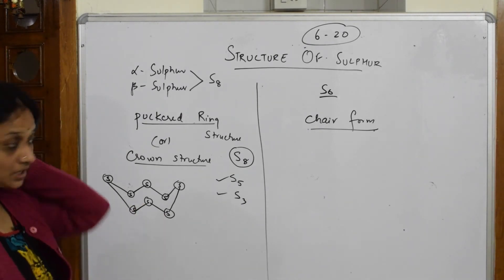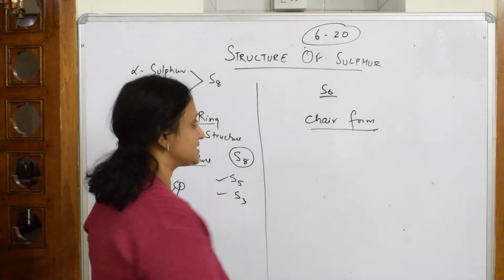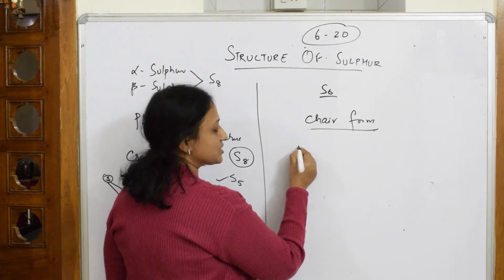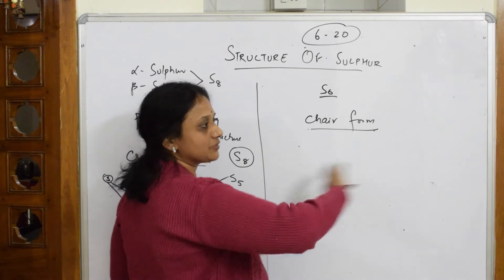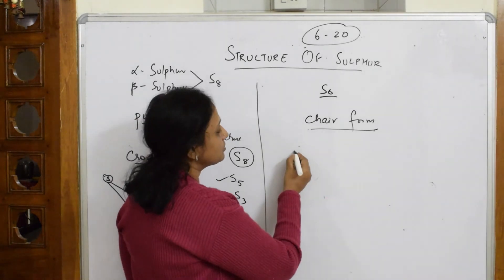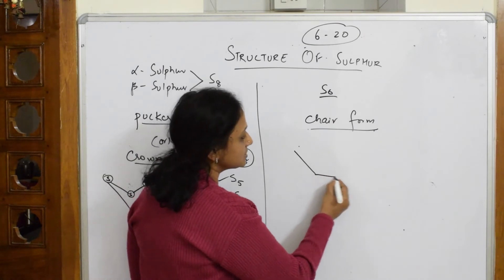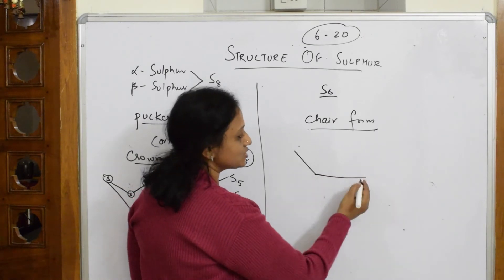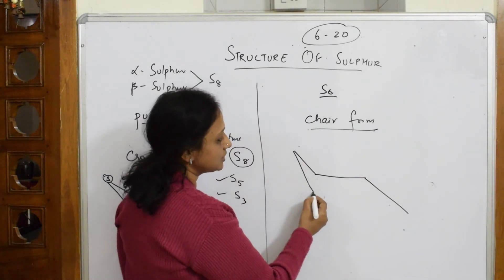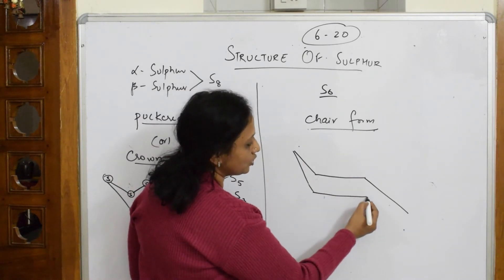When I have to draw the chair form S6, first make the chair form. One, this is the two, second, the base of the chair. Now take this from here, done. Now exactly the line opposite and join here.